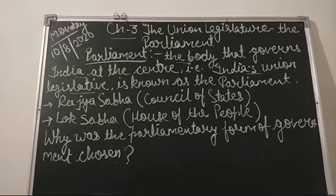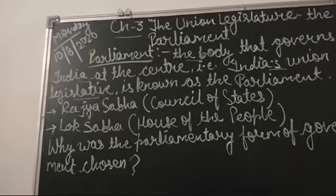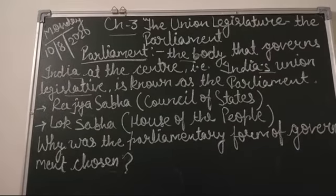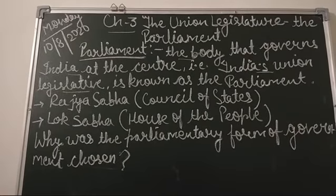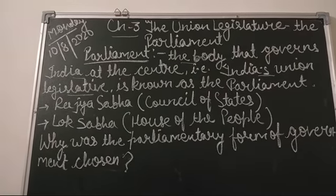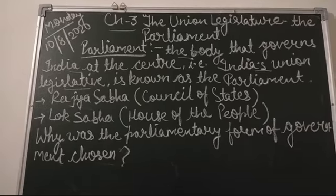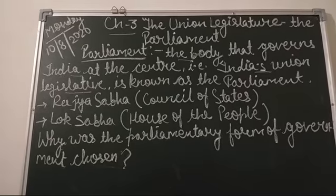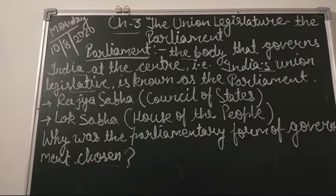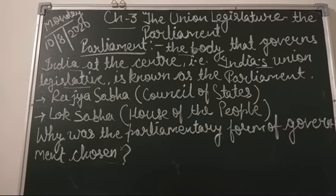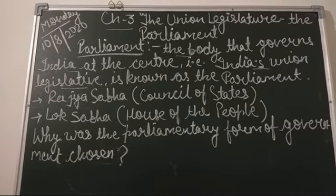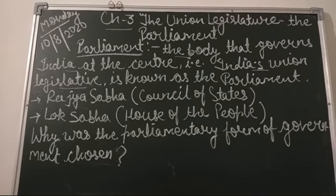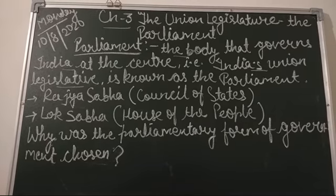There are three organs of government: the executive, the legislature, and the judiciary. The executive is answerable to the legislature, and if the executive loses the support of the majority in Parliament, it will have to resign. In a presidential form of government, the head of state — the president — is directly elected by the people, wields great power, heads the executive, and the executive is not answerable to the legislature.